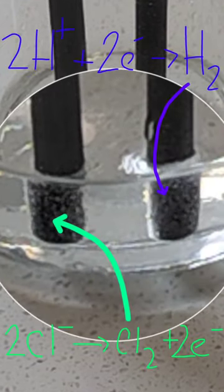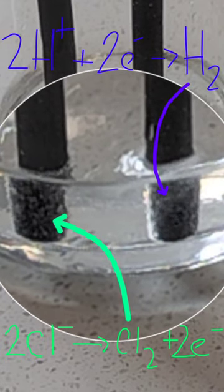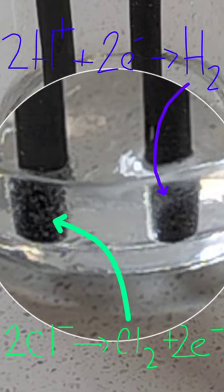The chloride ions are being attracted towards the anode where they're losing electrons and being oxidised, whilst the hydrogen ions are being attracted towards the cathode where they're gaining electrons and being reduced.